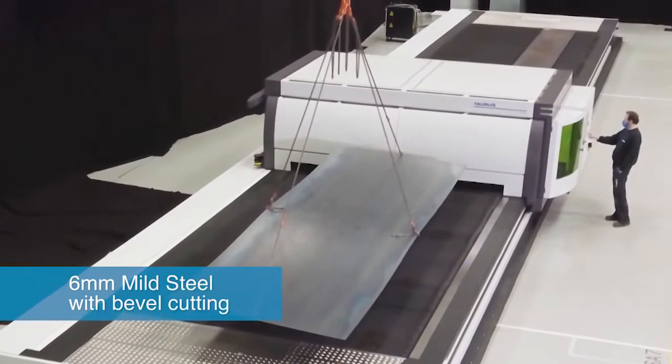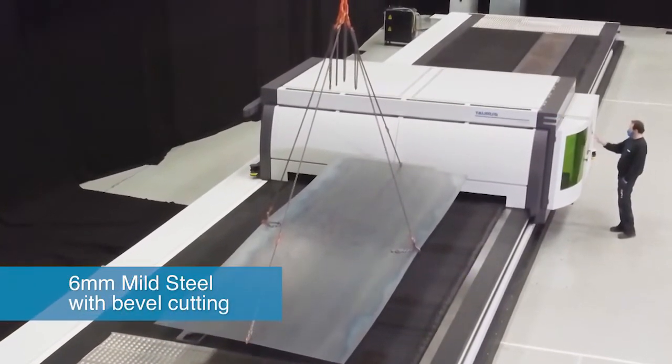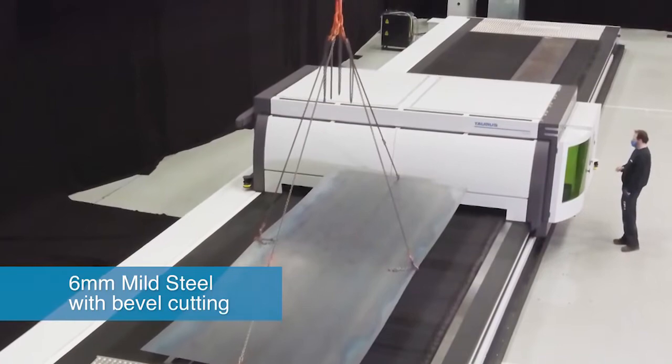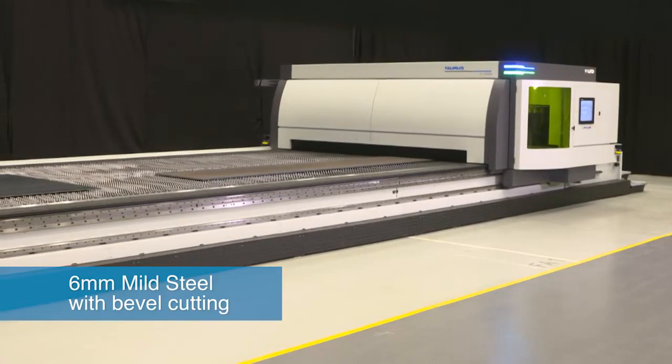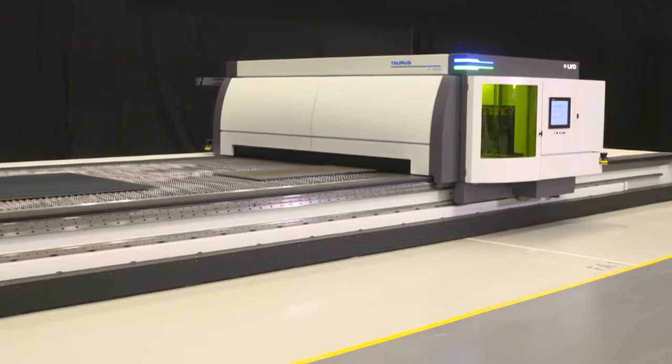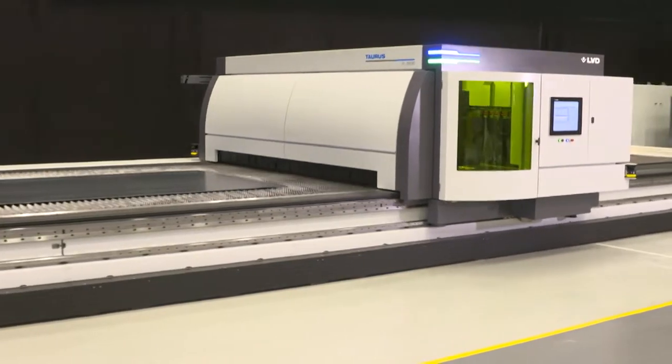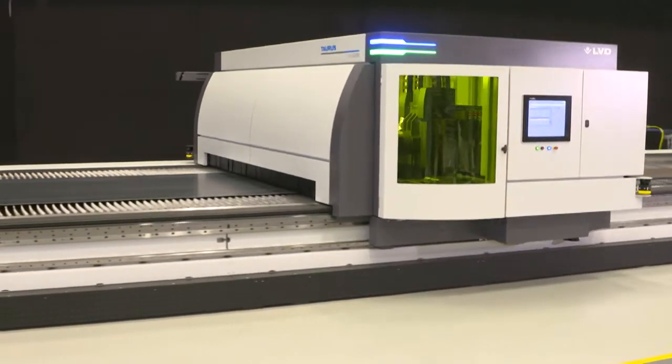Here you can clearly see that only the gantry has a cover. The rest of the cutting table remains free for loading and unloading while the machine is cutting. Although XXL, the Taurus has an appealing design and, as you can notice, high dynamics for a machine of this size.